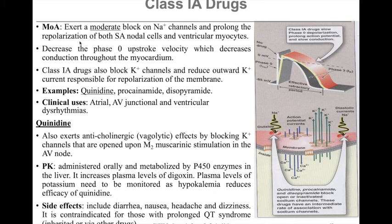Quinidine also exerts anticholinergic or vagolytic effects by blocking potassium channels opened upon M2 muscarinic stimulation in the AV node. In terms of pharmacokinetics, it is administered orally and metabolized by cytochrome P450 enzymes in the liver. It can increase the plasma levels of digoxin. Plasma levels of potassium need to be monitored, as hypokalemia reduces the efficacy of quinidine. Side effects include diarrhea, nausea, headache, and dizziness, and it is contraindicated for those with prolonged QT syndrome, which can be inherited or induced by other medications.